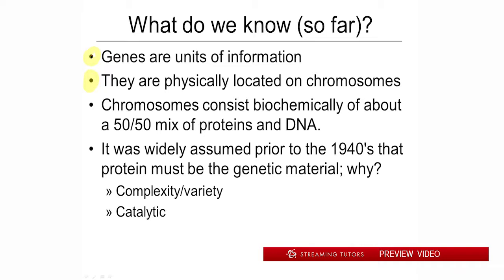Something not yet discussed is that biochemists had examined chromosomes and determined in a bulk way that they were made of proteins and DNA. DNA was known about — it just wasn't thought to be particularly important. It was found in every chromosome and was thought to be part of a scaffolding material. Since chromosomes are made up of about half DNA and half protein, it was widely assumed in the early days that protein was the genetic material, because DNA only has four different bases to create variability, whereas proteins have 20 different amino acids.